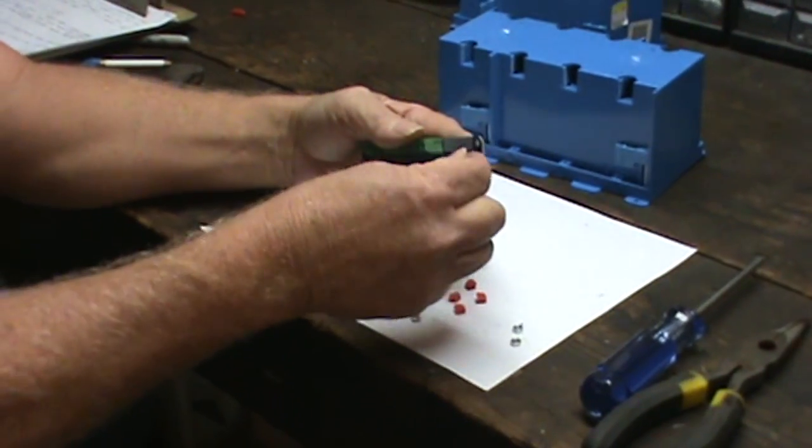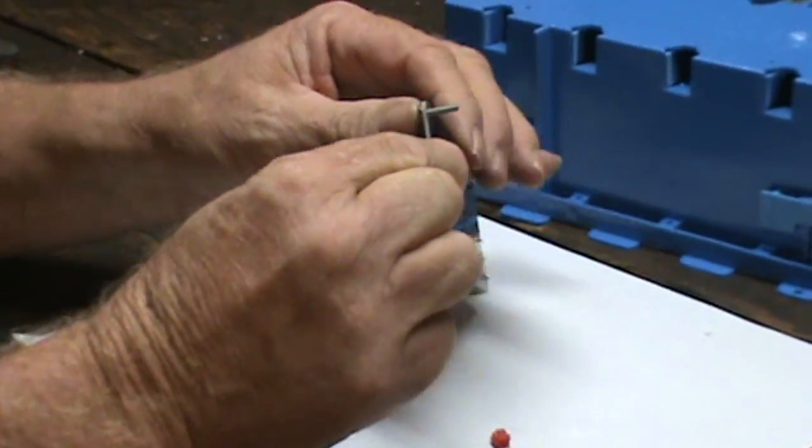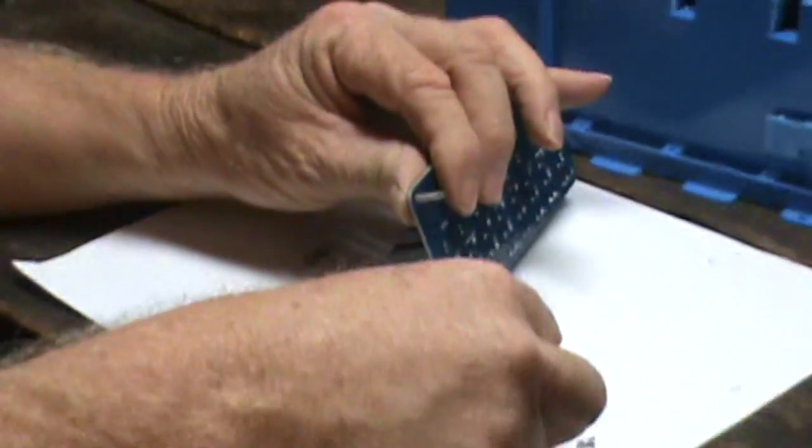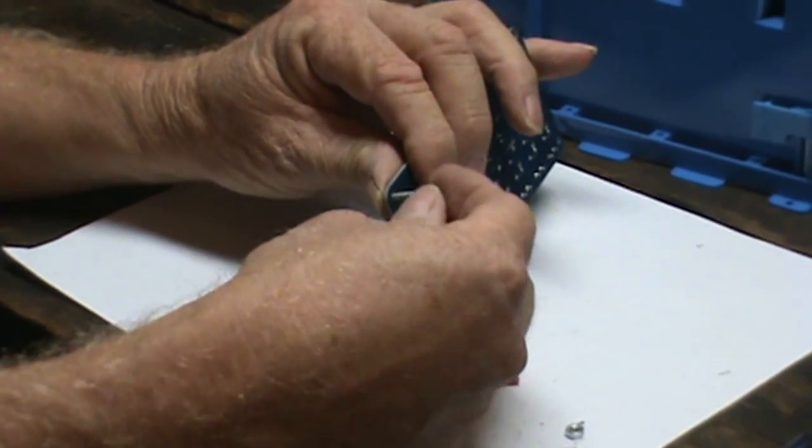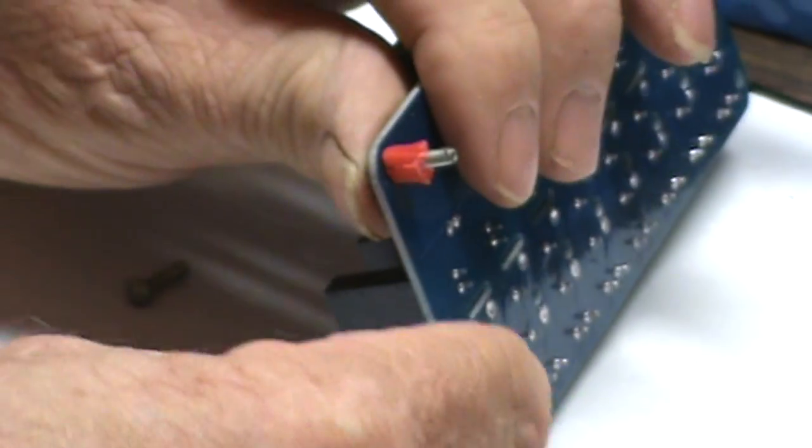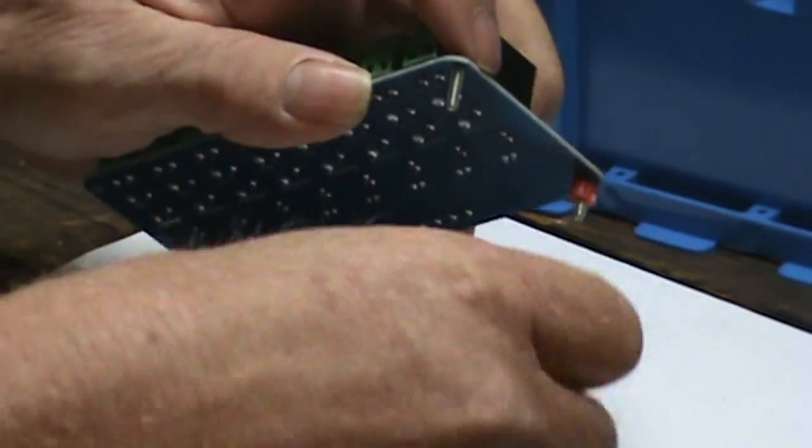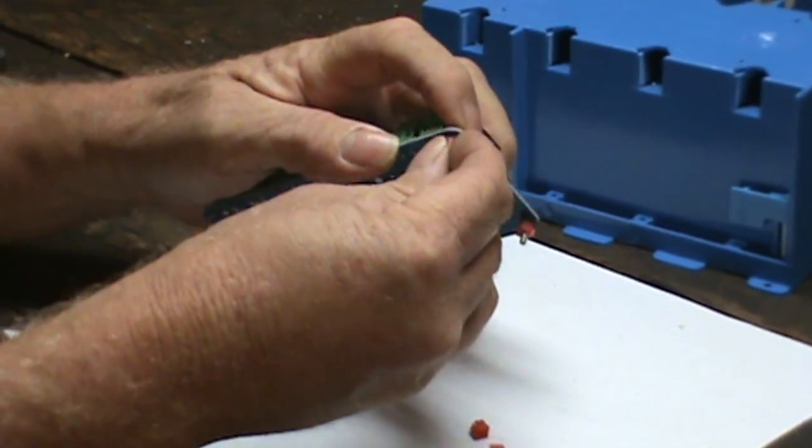Now as we put the screws in the relay board right here, and these are number four machine screws and nuts. Put the screw in, slip on your spacer, and because I cut it off with the wire cutters, it's slightly crimped, and that keeps it from falling off. Makes it easier to put together here. So we just slip all four of these together.